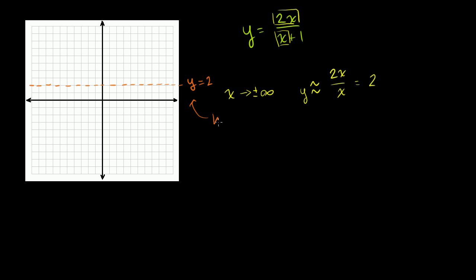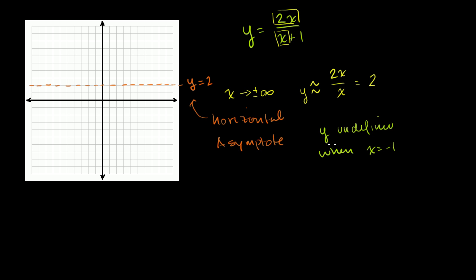That is what our graph approaches but never quite touches as we get to larger and larger, more and more positive or negative values of x. Now, do we have any vertical asymptotes? When x is equal to negative 1, this function is undefined — the denominator becomes 0. This is a vertical asymptote because the x plus 1 doesn't cancel out with something else.